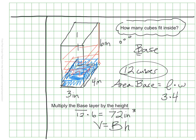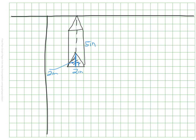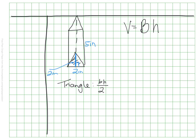This is important because I can use the same strategy to find the volume of a triangular prism, which I would not be able to do with length times width times height. I find the area of the base (big B) and multiply by the height, even for a triangular prism. In this case, the base is a triangle, so I first find the area of the triangle: base (little b) times height divided by 2. My triangle is 2 inches by 2 inches, so 2 times 2 divided by 2 equals 2 square inches.